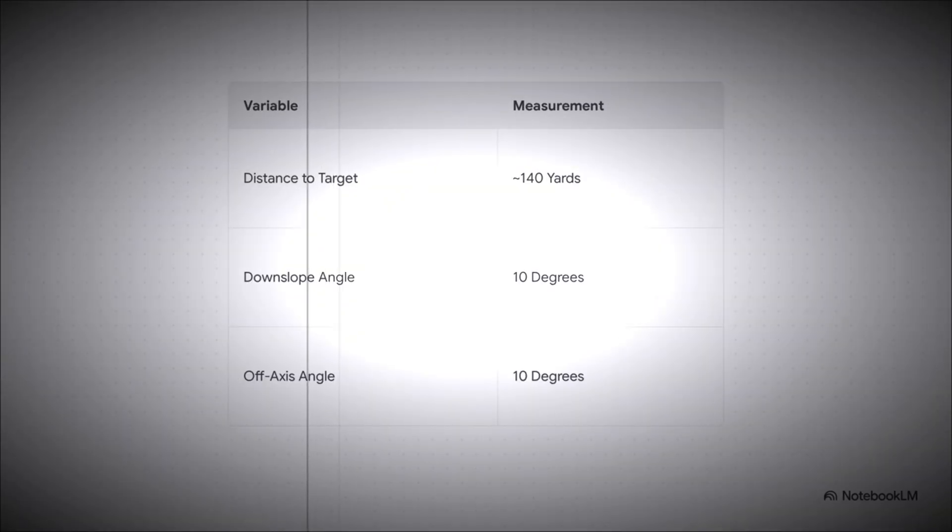So, the analyst starts by mapping out the scene's geometry. We're talking about a shot from about 140 yards away at a pretty shallow 10-degree downward angle and 10 degrees from the side. Now, I want you to remember that. The 10 and 10 angle. It's gonna be really important.